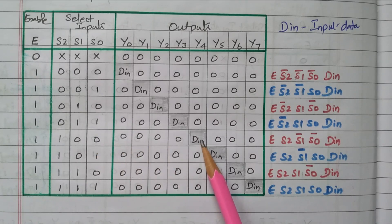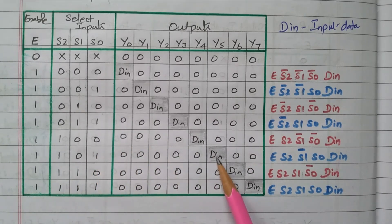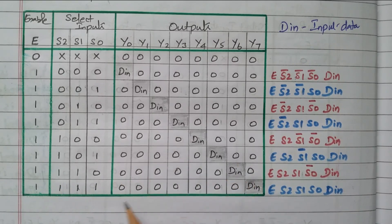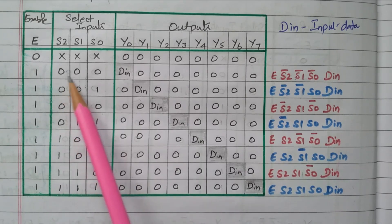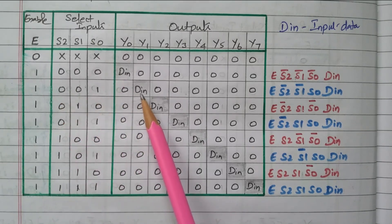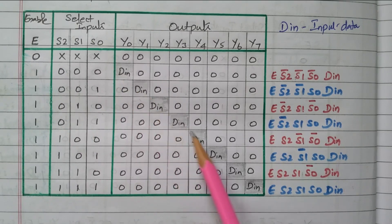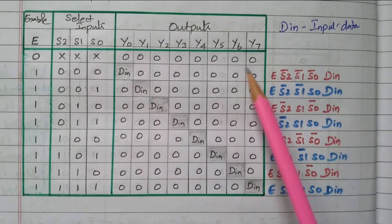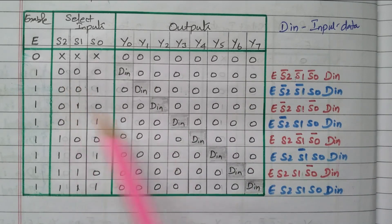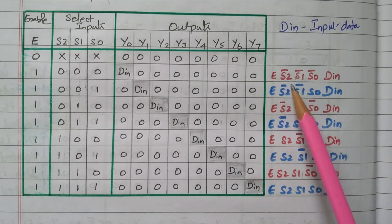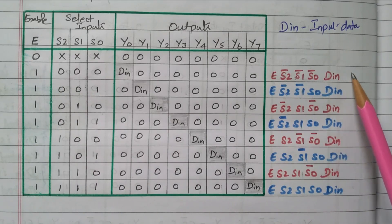For 1,0,0 (fifth combination), data is available in the fifth position (Y4). For 1,0,1 (sixth combination), data is in the sixth position (Y5). For 1,1,0, data is in the seventh position (Y6); and for 1,1,1 (eighth combination), data is in the eighth position (Y7). So it is very simple: the first combination puts data at the first position, second at the second, and so on up to the eighth. The single input produces 8 different outputs based on the selection line and complement connections.